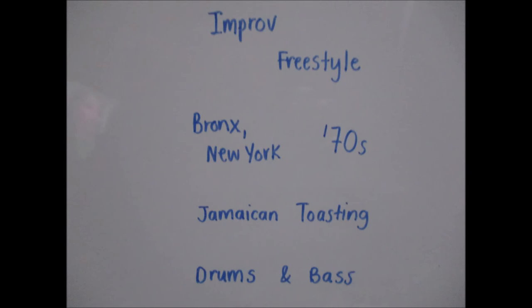Rap. Rap music is based on improvisation and freestyle. It was born in the Bronx, New York and came to light in the 1970s. It came from the tradition of Jamaican toasting and is famous for using drums and bass for beats. Listen to these examples.